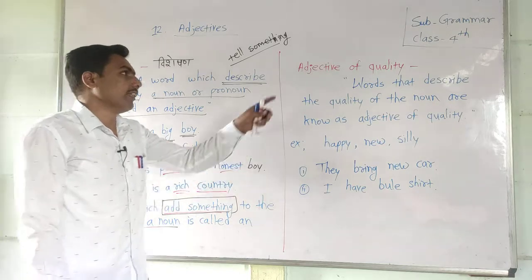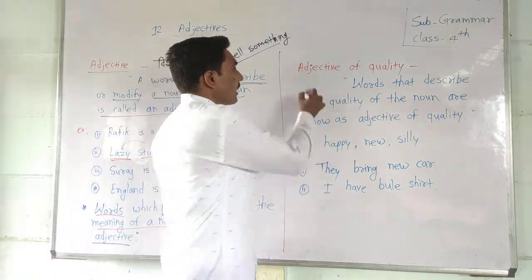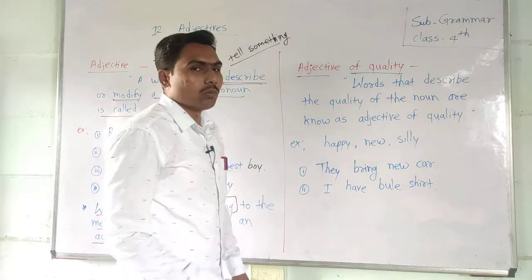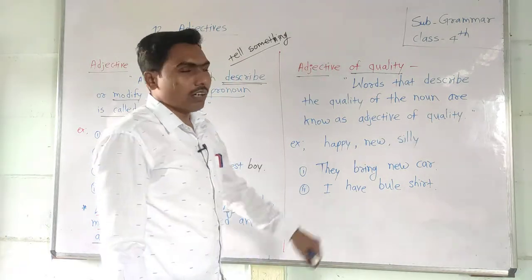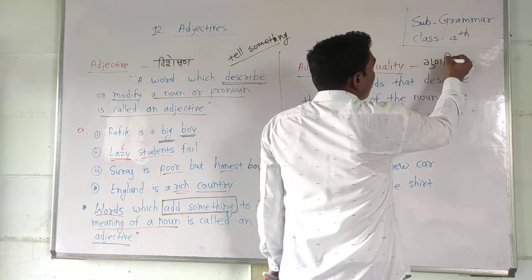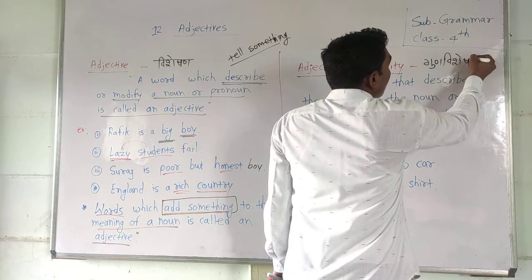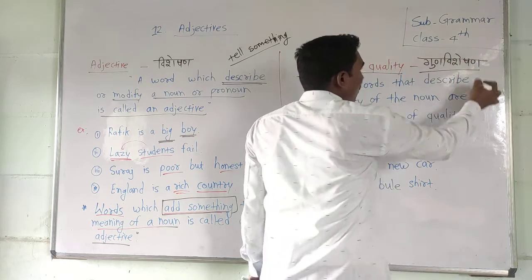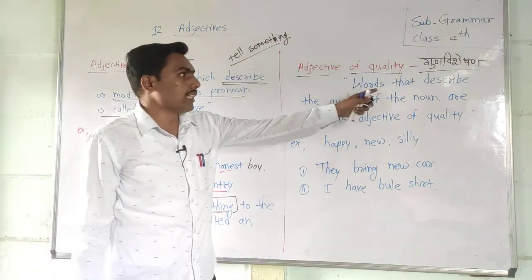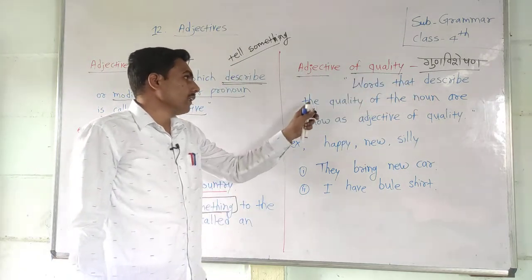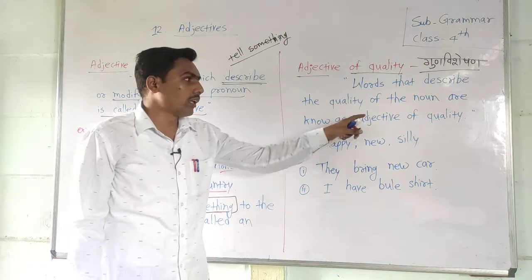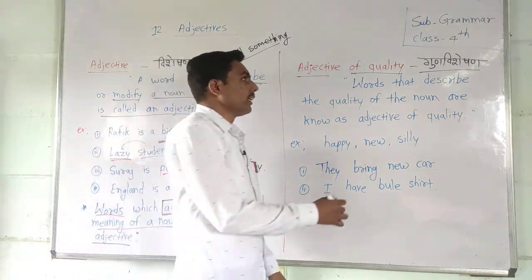Now next — adjective of quality. What is meant by adjective of quality? Words that describe the quality of a noun are known as adjective of quality. They describe the quality of a noun.